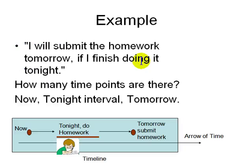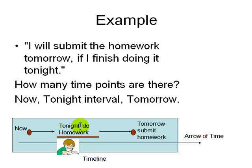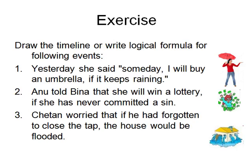Let's look at an example: 'I will submit the homework tomorrow if I finish it tonight.' How many time points are there in this sentence? First, there's a 'now' when you're uttering the sentence. Then 'tonight' is in the future — that's when you plan to do the homework. And 'tomorrow' is also in the future — when you'll submit it. So you can see two time points with an interval in between. You can write logical formulas or draw timelines for such sentences.